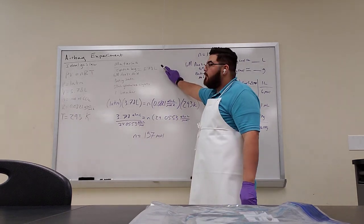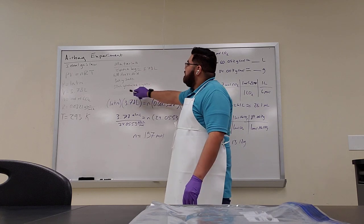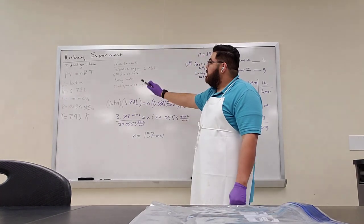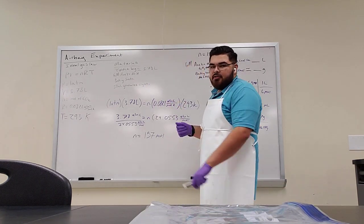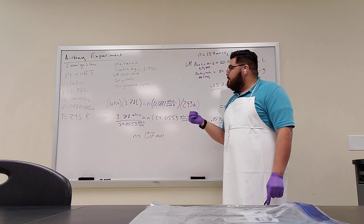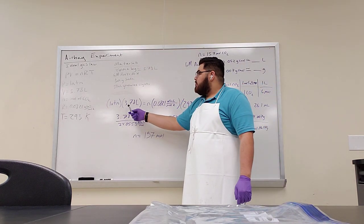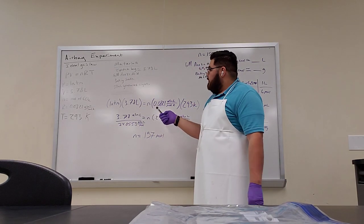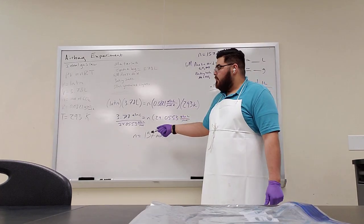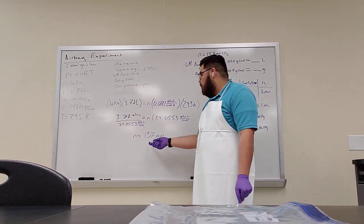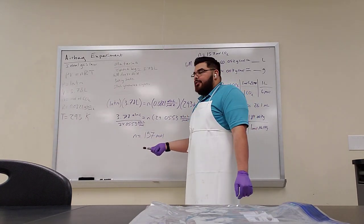So our materials: ziploc bag, the moles of 6 moles of acetic acid with baking soda, and about a graduated cylinder just to measure. And then this is the equation that's plugged in. So you have 1 ATM times your volume equals to moles times your R times your T, and N is equals to 0.157 moles. Yeah, CO2.